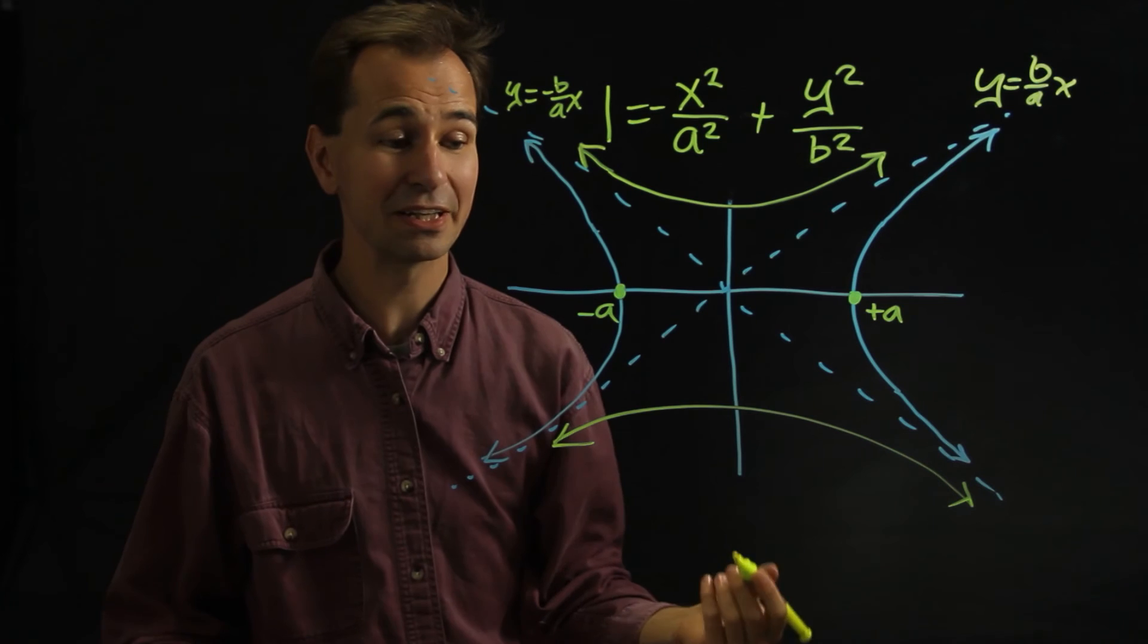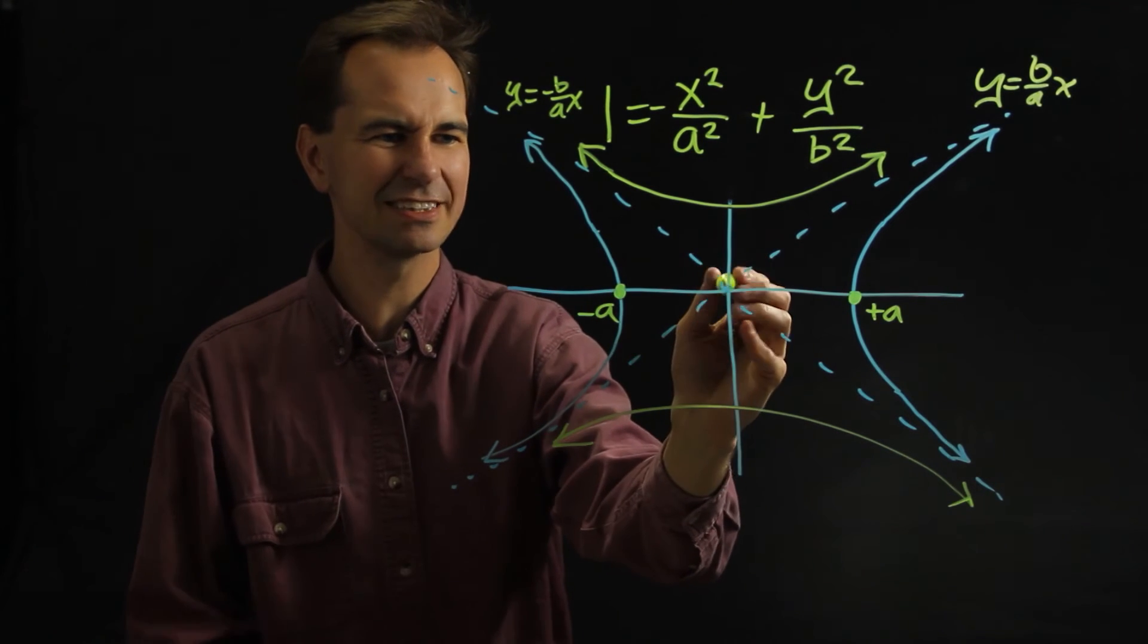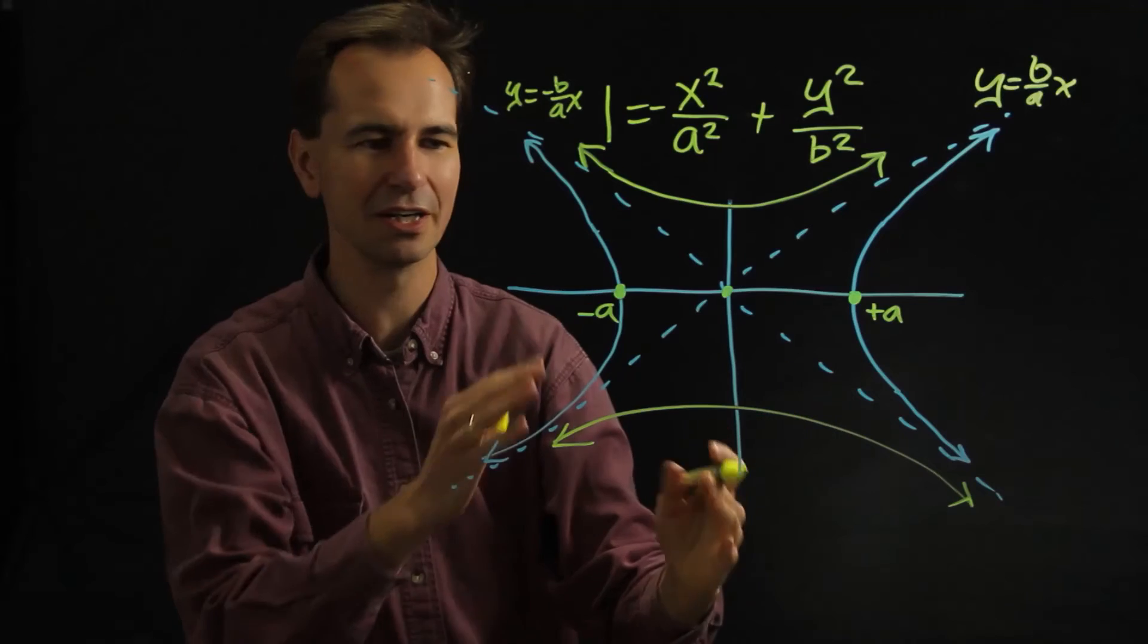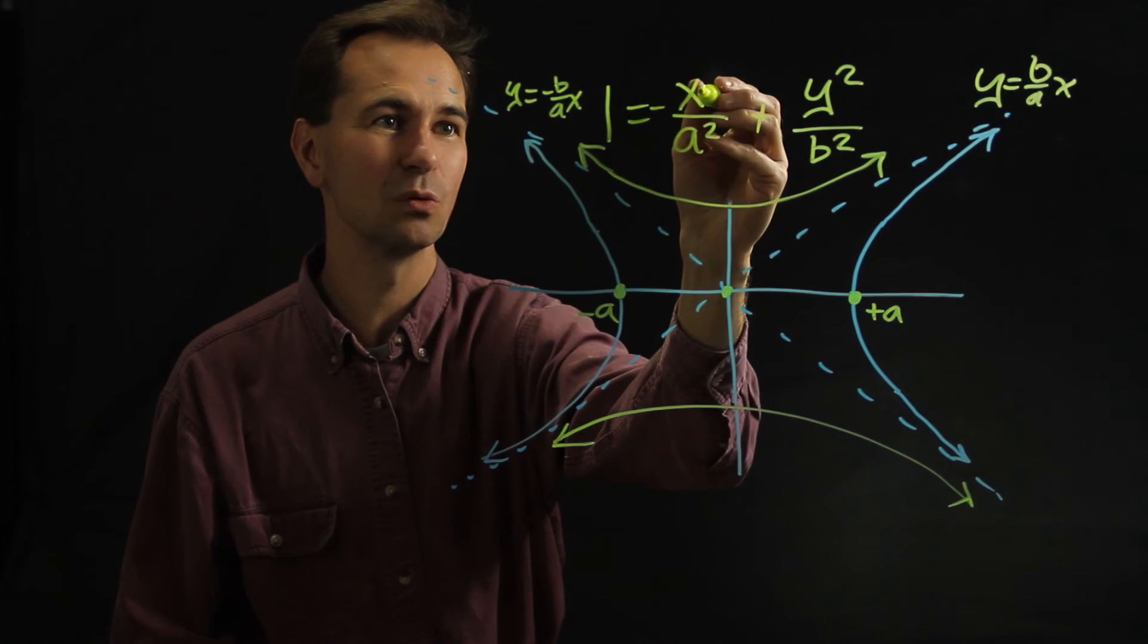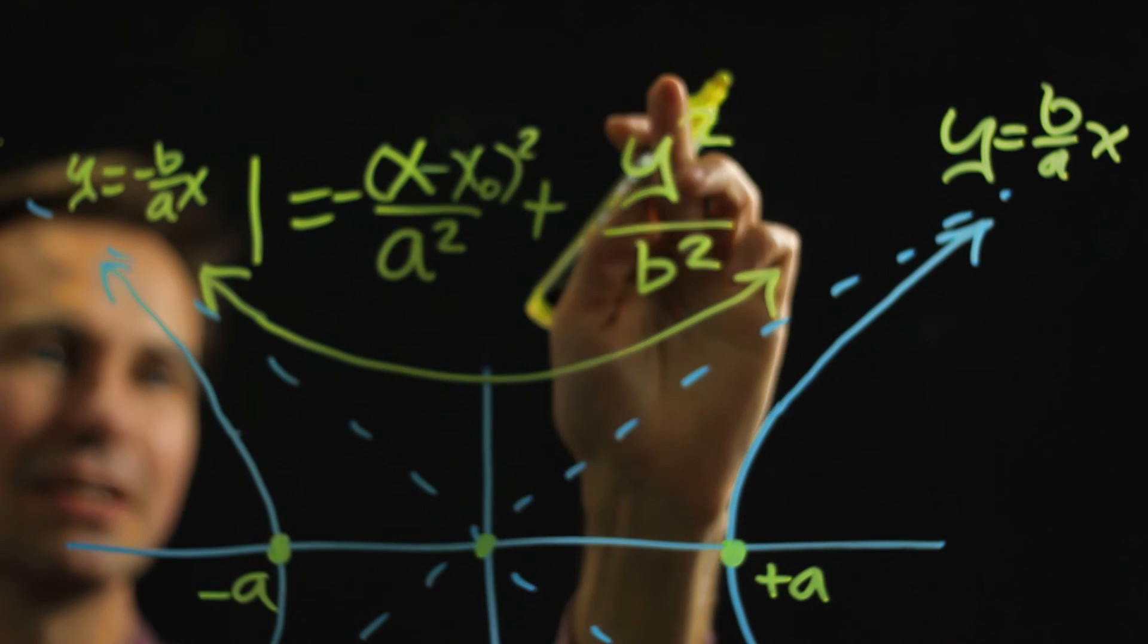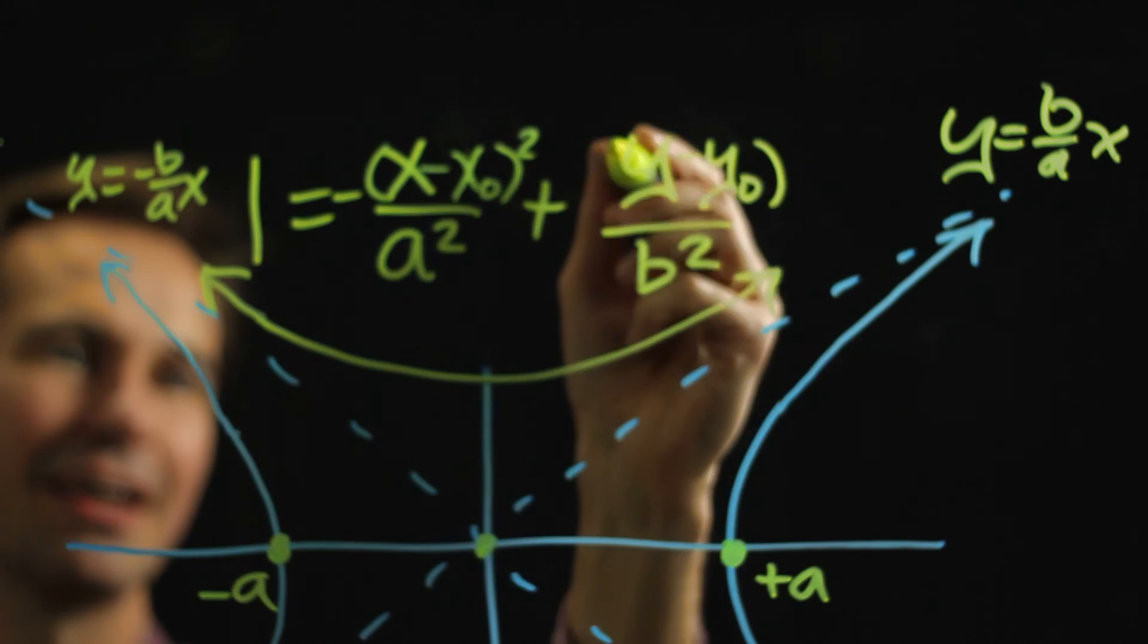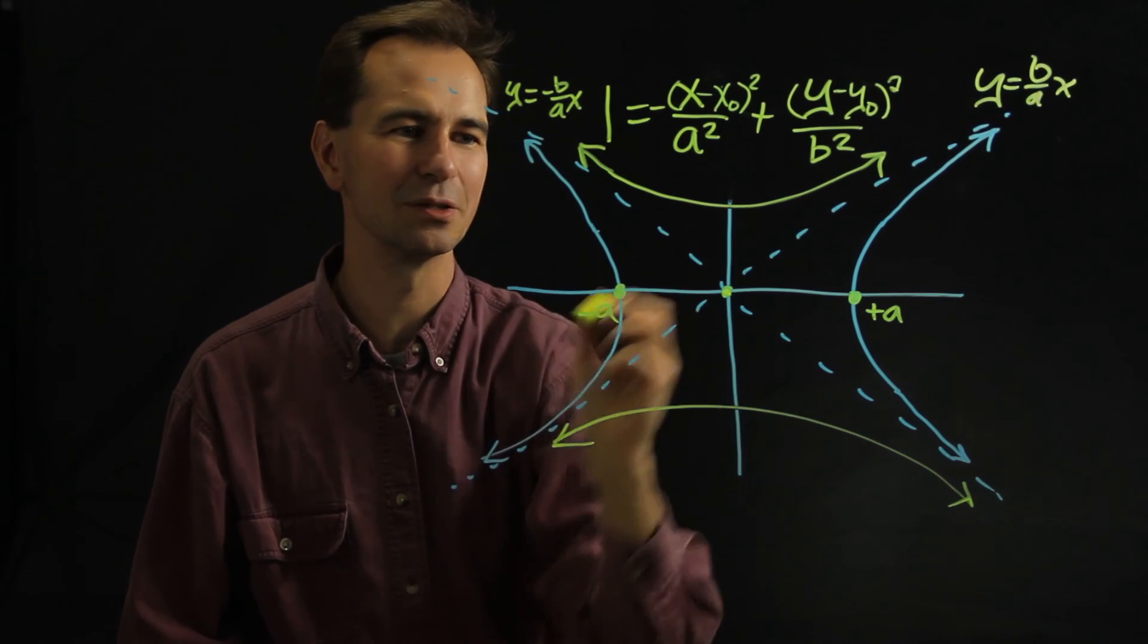And then something else that you might see is sometimes it's not centered right here at the origin at 0, 0. Sometimes the whole thing is shifted somewhere else. And when that happens you replace this x with an x minus x naught and you replace the y with y minus y naught. And the x naught and the y naught tell you where that center point is.